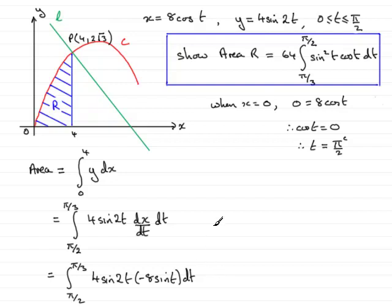All we need to do now is just clean this up. So come down here and we've got the area R. In fact, I'll just cut that off there. We've got the area R is equal to, well, 4 times minus 8 is minus 32. So we've got minus 32, which I'm going to put outside the integral, going from π/2 to π/3.